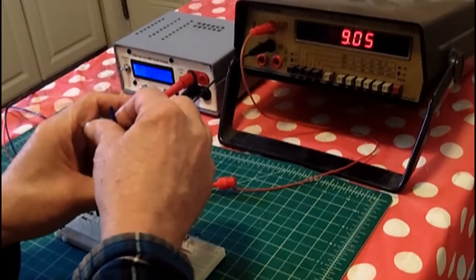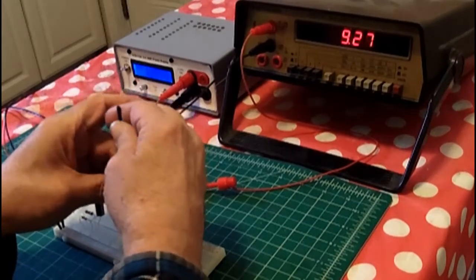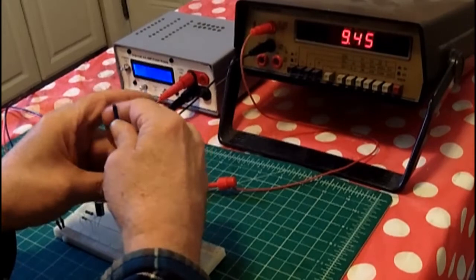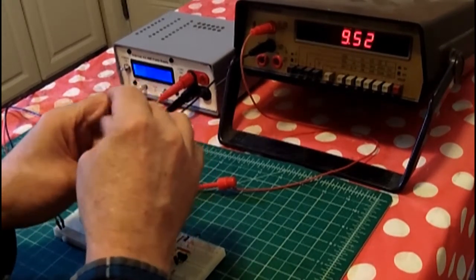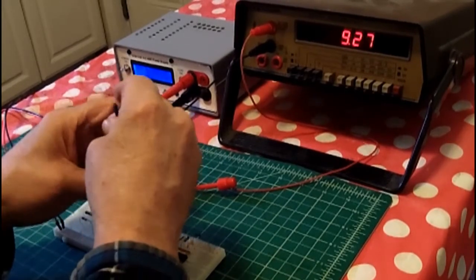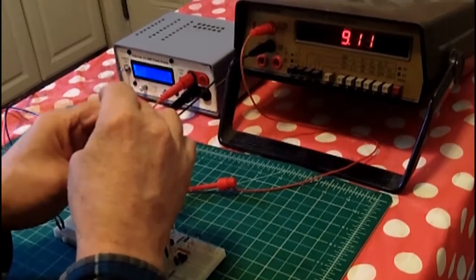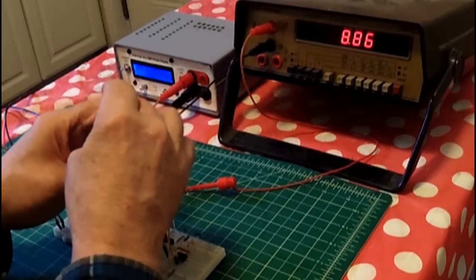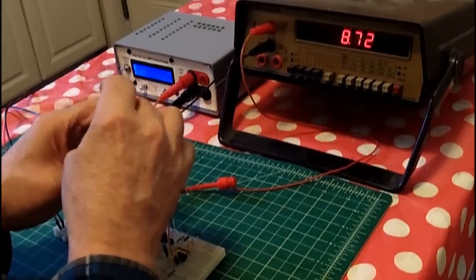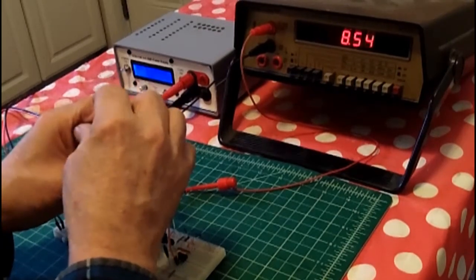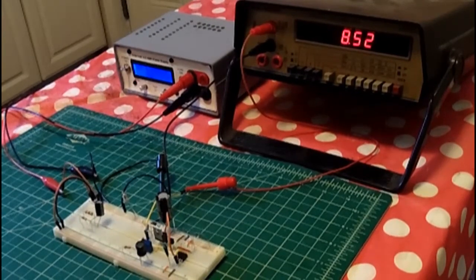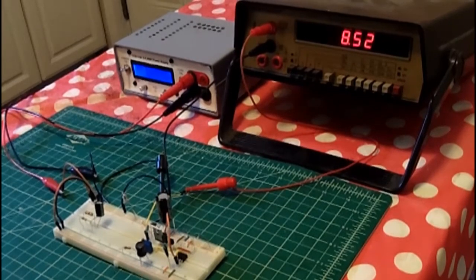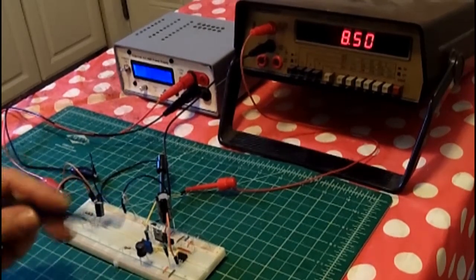And we can adjust that up to, let's see how high it'll go, nine and a half volts. And turned all the way down, just about. So you have just about a one volt range there to adjust it anywhere from eight and a half volts to nine and a half volts. And that's just using the 555.